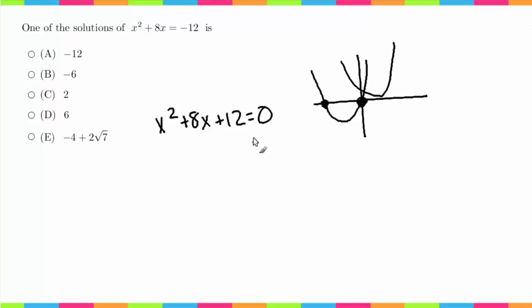In order to factor this, we need to figure out the factors of 12. Factors are just two numbers that multiply to 12 and add to 8. So we have 1 times 12, we have 2 times 6, we have 3 times 4, and then just the numbers reversed.